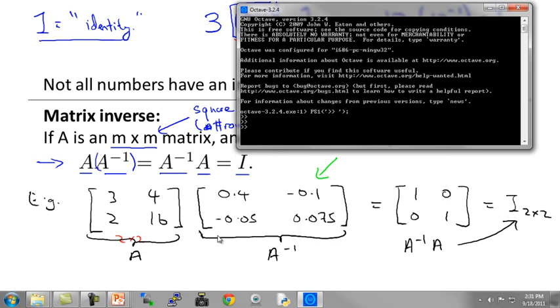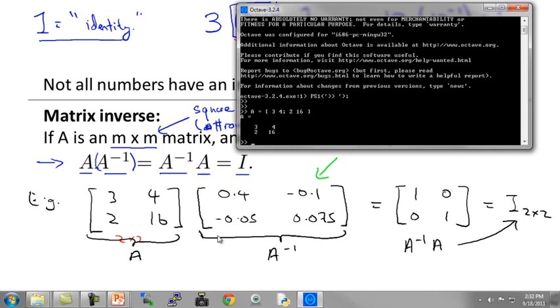But let me just quickly show you an example. I'm going to set my matrix A to be equal to that matrix on the left. So I'm going to type 3, 4, 2, 16. So that's my matrix A, right? This is matrix 3, 4, 2, 16 that I have down here on the left.